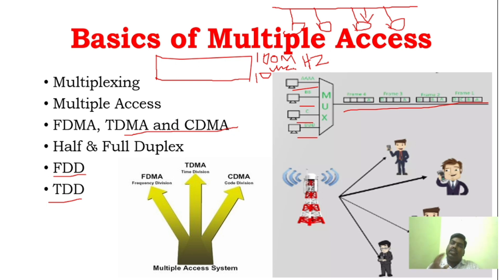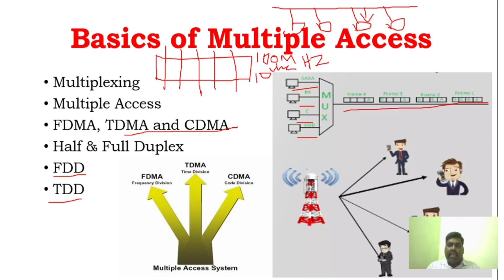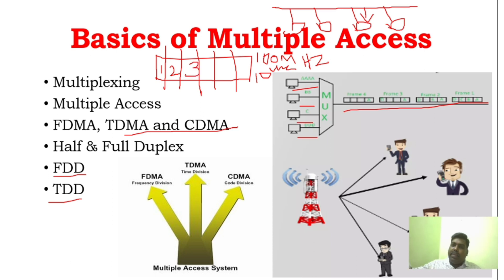What is Frequency Division Multiple Access? What is Time Division Multiple Access? What is Code Division Multiple Access? In FDMA, different frequency slots are assigned within the channel. For example, in a 100 MHz channel, it is divided into 10 MHz slots — 10 MHz, 10 MHz, 10 MHz — and so on. That is called Frequency Division Multiple Access.